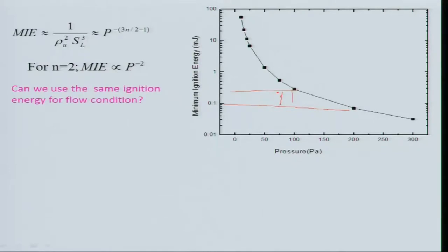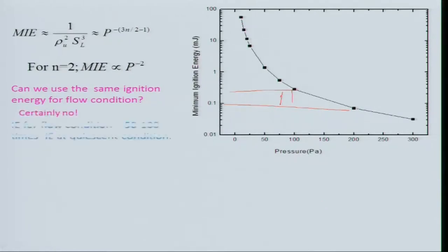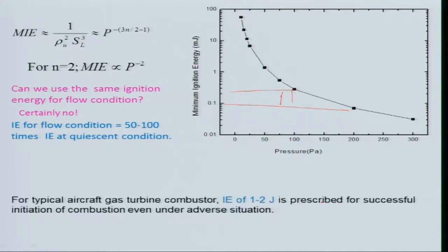Can you use the same ignition energy for flow conditions? Certainly not — for flow conditions you need 50 to 100 times more ignition energy than in quiescent atmosphere, because heat losses by convection are not considered in the quiescent analysis. For a typical gas turbine combustor, an ignition energy of 1 to 2 joules is prescribed for successful initiation of combustion even under adverse situations, such as high altitude where pressure is low.